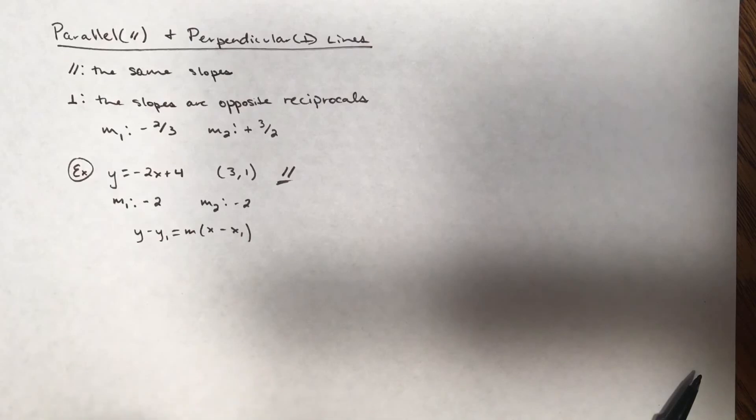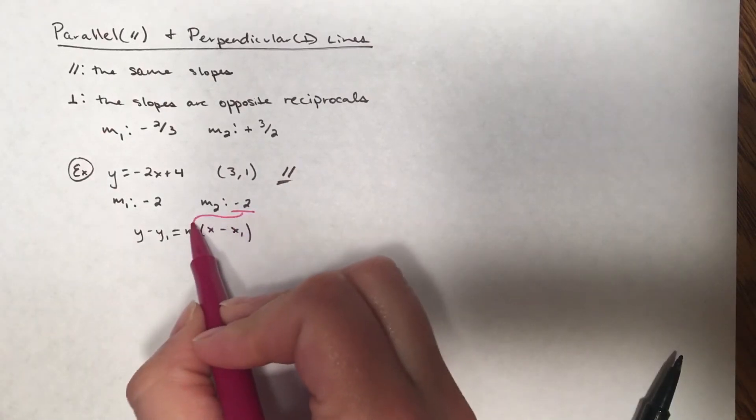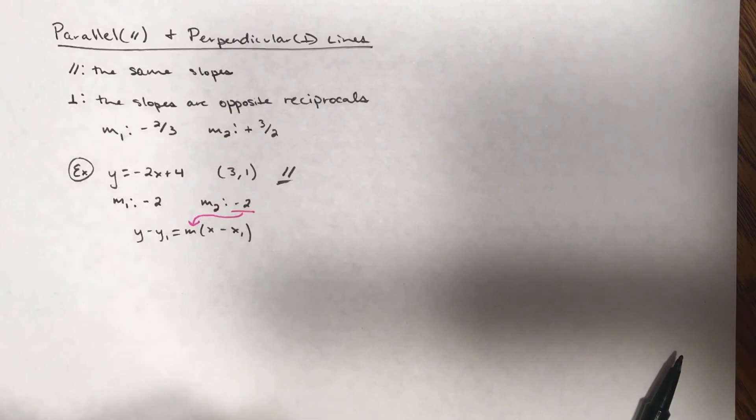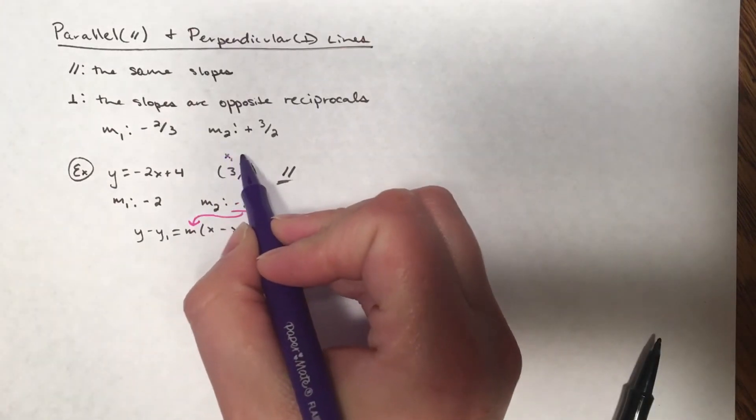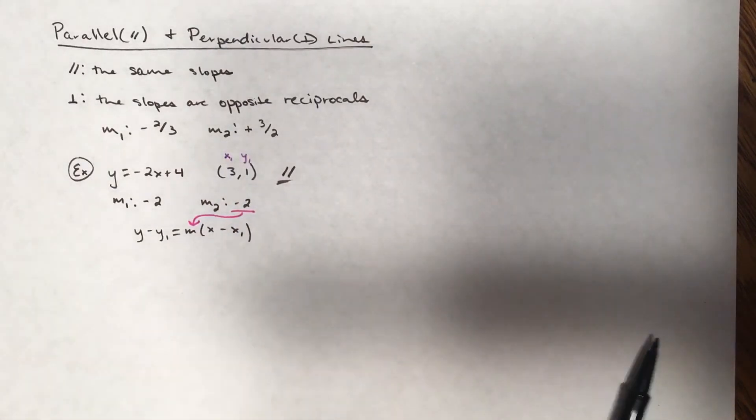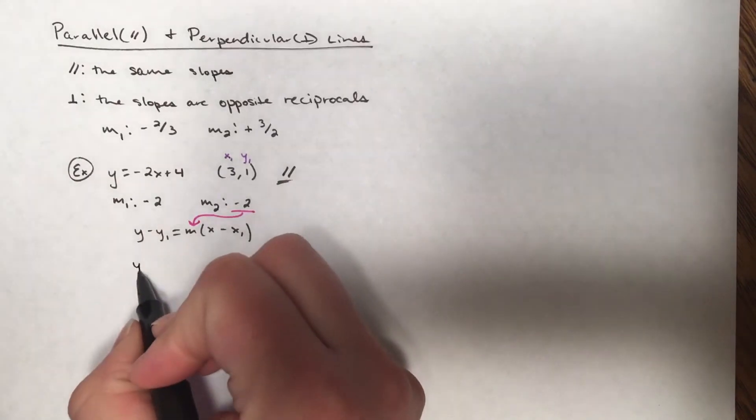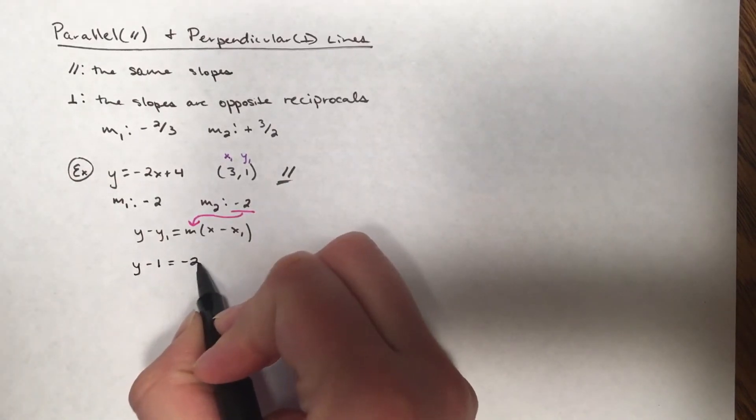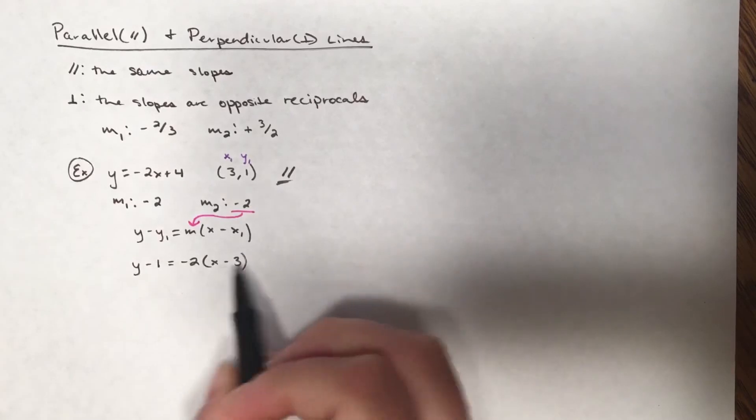I'm going to take this m2 and substitute it into my equation in that m spot. The (3, 1) represents x1, y1, and I substitute those values right into that equation.